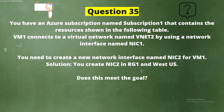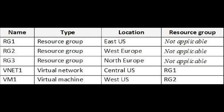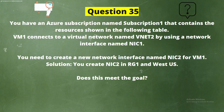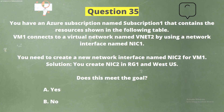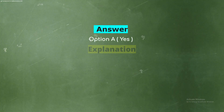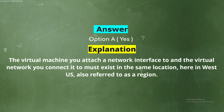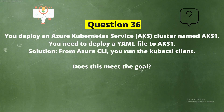Question 35: You have an Azure subscription named Subscription1 that contains resources shown in the following table. VM1 connects to a virtual network named VNet2 by using a network interface named NIC1. You need to create a new network interface named NIC2 for VM1. Solution: You create NIC2 in RG1 and West US. Does this meet the goal? Option A: Yes. Option B: No. The correct answer is Option A: Yes. Explanation: The virtual machine you attach a network interface to and the virtual network you connect it to must exist in the same location — here, West US — also referred to as a region.